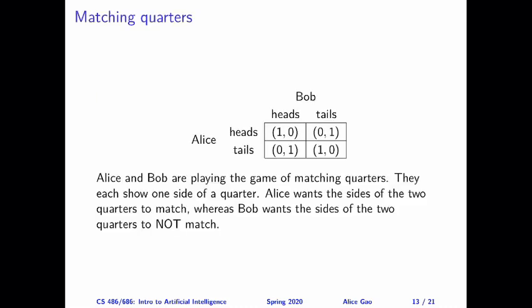This is the game of matching quarters. It's supposed to be called matching pennies — that's the most well-known name of this game. But because we're in Canada and we don't have pennies anymore, the smallest currency we have is a quarter, so we're going to match quarters instead. Alice and Bob are playing this game, and they each have a quarter, and they will simultaneously show one side of their quarter.